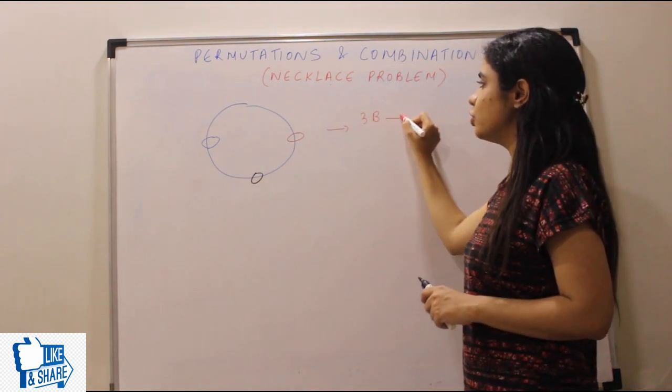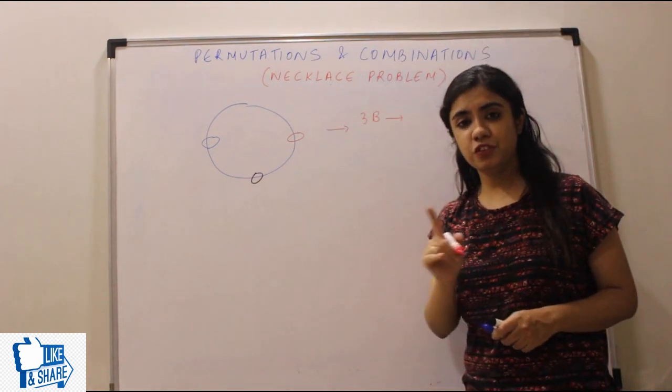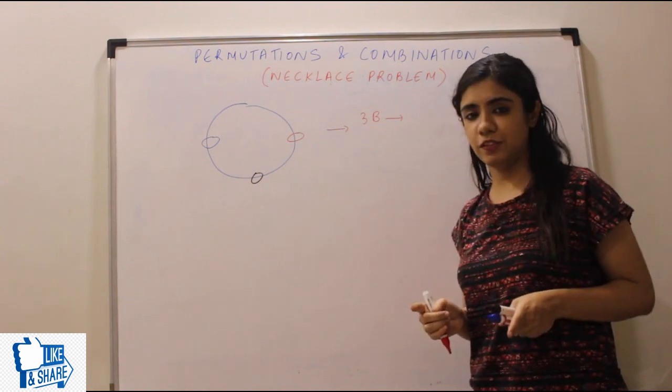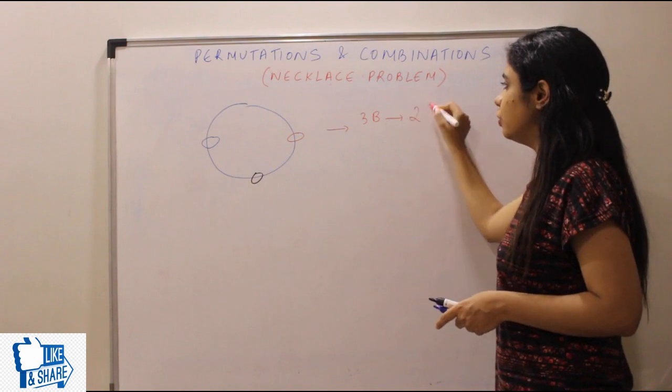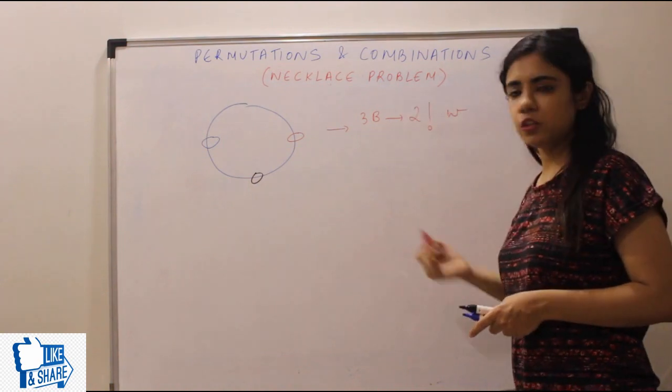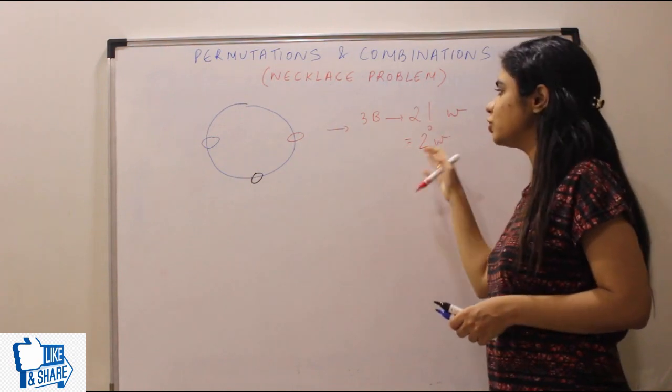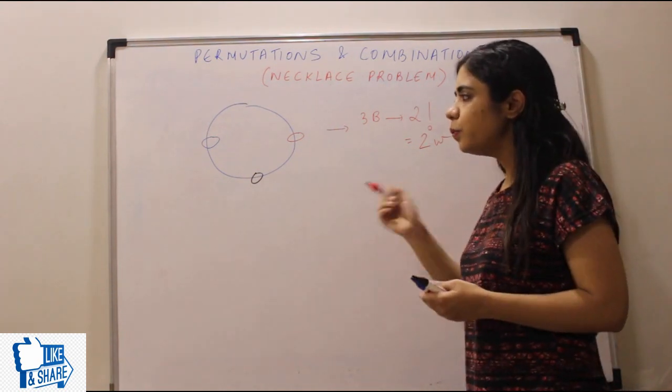Ideally ways kithana hona chahiye tha? Three beads should have been arranged in three minus one. Why three minus one? It's explained in the previous video. So three minus one, two factorial ways. So two factorial ways is two ways. Correct? Three beads, two ways.